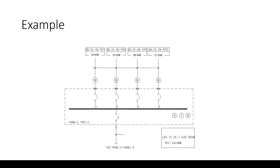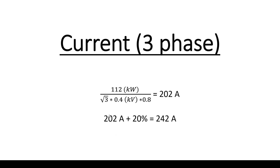Let's size the main incomer circuit breaker for the 112 kW total load. Using the formula: I = 112 kW ÷ (√3 × 0.4 kV × 0.8). The √3, 0.4 kV, and 0.8 power factor values remain constant across most calculations. The result is approximately 202 amperes.